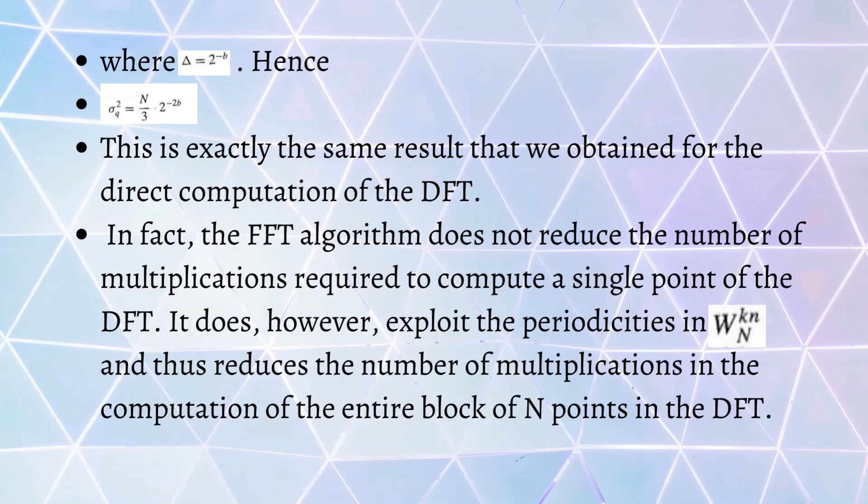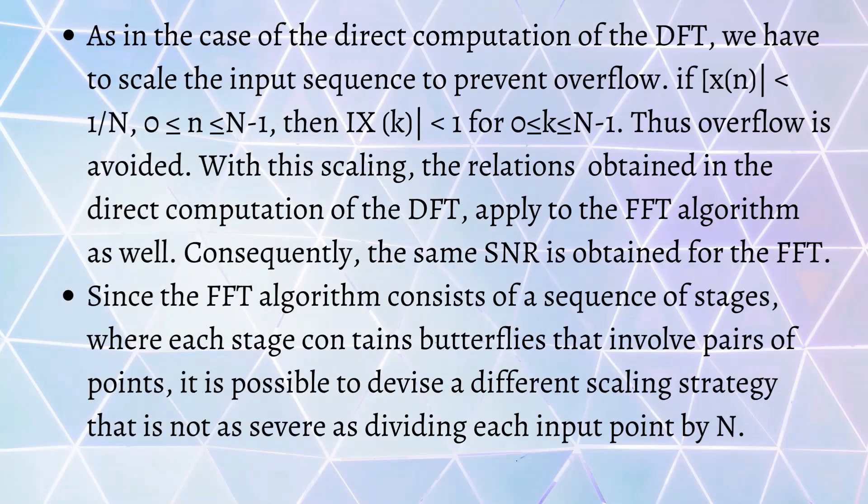As in case of direct computation of DFT, we have to scale the input sequence to prevent overflow. This happens when magnitude of x(n) is less than 1/N, where n is in the range of 0 to N-1. Then the magnitude of X(k) will be less than 1 for k in the range 0 to N-1. With this scaling, the relations obtained in direct computation of DFT apply to the FFT algorithm as well. Consequently, the signal-to-noise ratio will be the same in FFT as well as in direct computation of DFT.